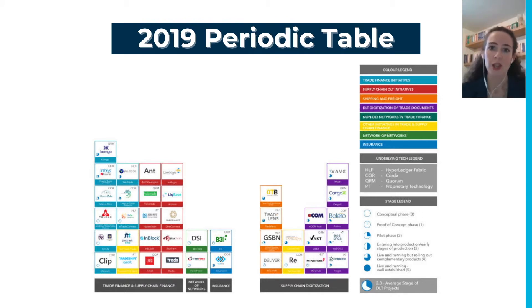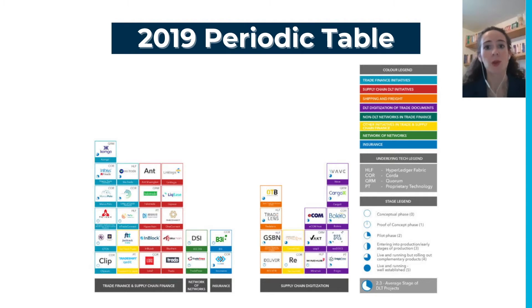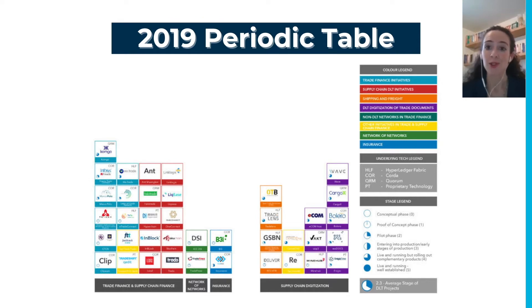Another reason for selecting this design is its presupposed intention to grow and morph over time. The very first periodic table of elements, developed in the 1860s, was made with intentional blank spaces that would want to be filled with elements predicted to exist but not yet known. This is also how we envisaged our periodic table of DLT projects in trade — as a momentary snapshot of the current industry landscape that will change over time. In fact, this year's periodic table does look quite different from last year's.